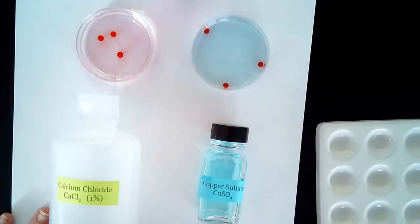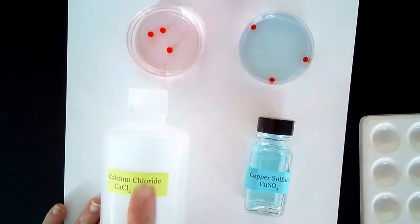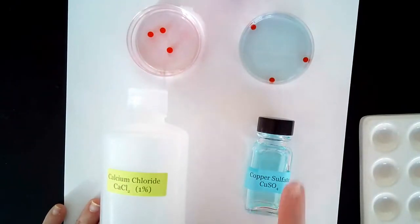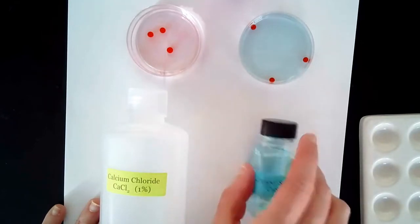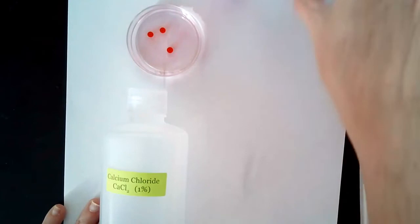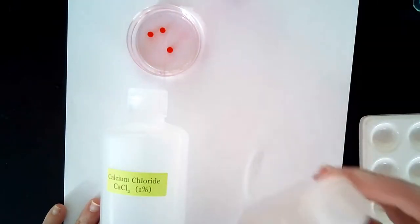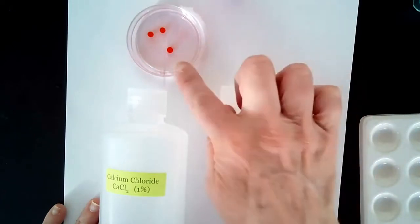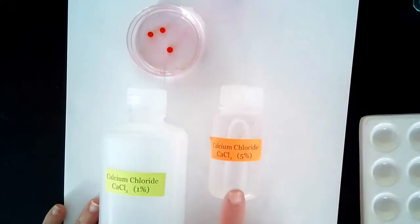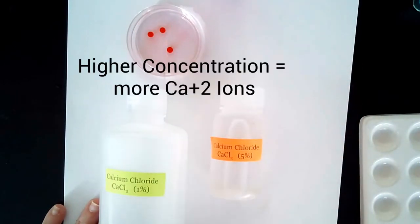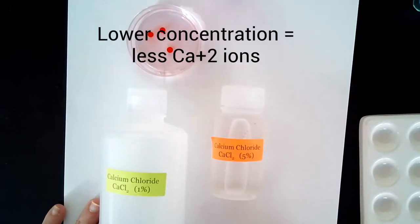You can use calcium chloride to make calcium alginate beads or you could use copper sulfate to make copper alginate beads. Additionally, you have some options for the concentration of the calcium chloride beads. These are one percent but you could also do five percent or you could dilute and make whatever new concentration of calcium chloride you want to use to make alginate beads.